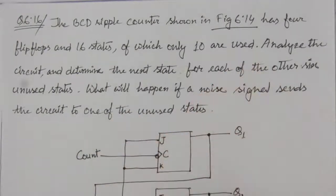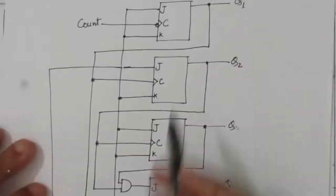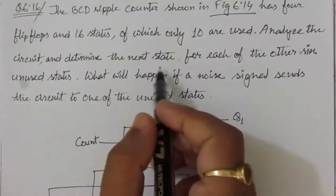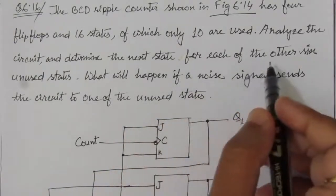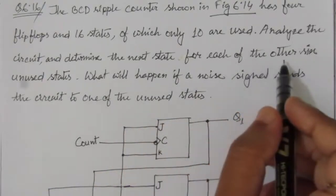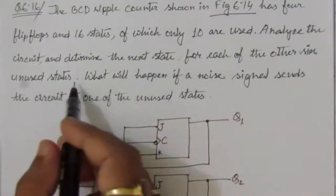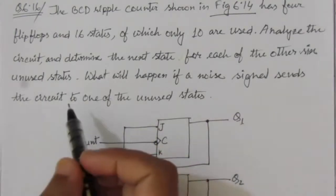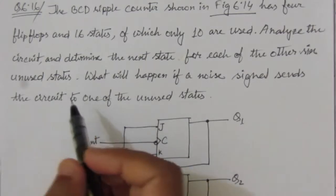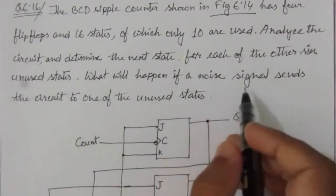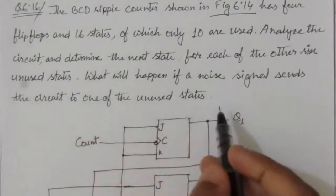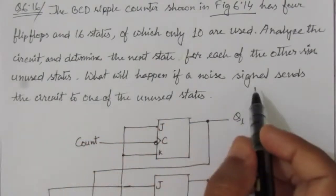We have to analyze the operation of circuit figure 6.14 and determine the next state for each of the six unused states. If a noise signal sends the circuit to one of the unused states, we need to determine what happens. The unused states are from 10 to 15.